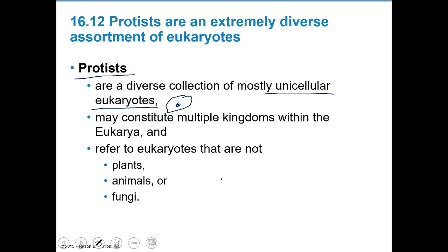They may constitute multiple kingdoms within Eukarya. They used to be called Kingdom Protista, but the term refers to eukaryotes that aren't plants, animals, or fungi. It's really just a miscellaneous category — a grab bag of things that didn't fit into any of those other groups.